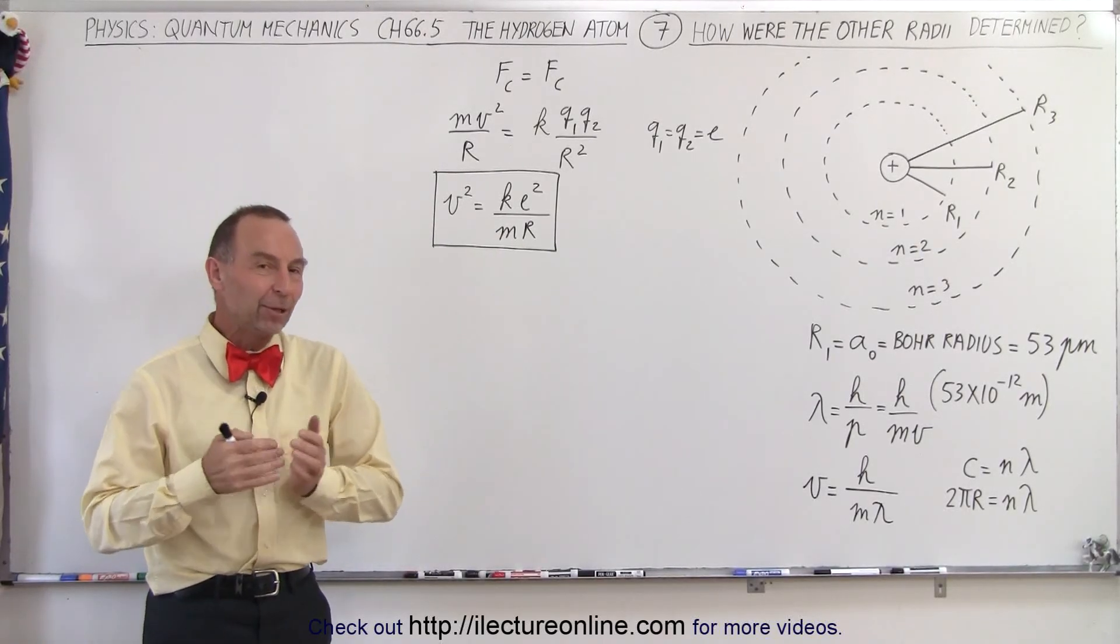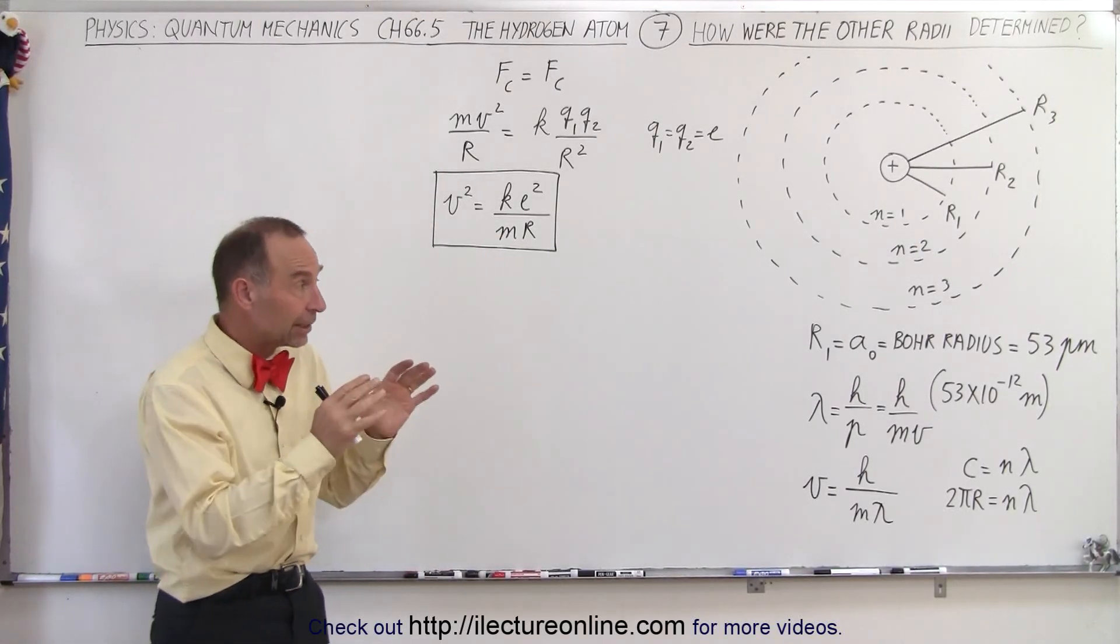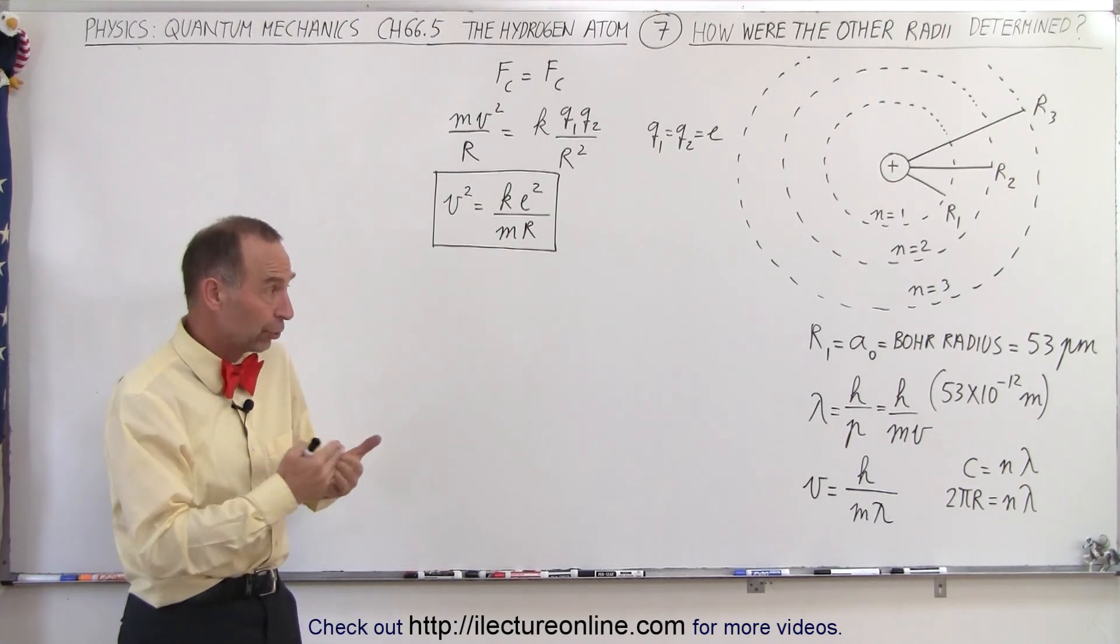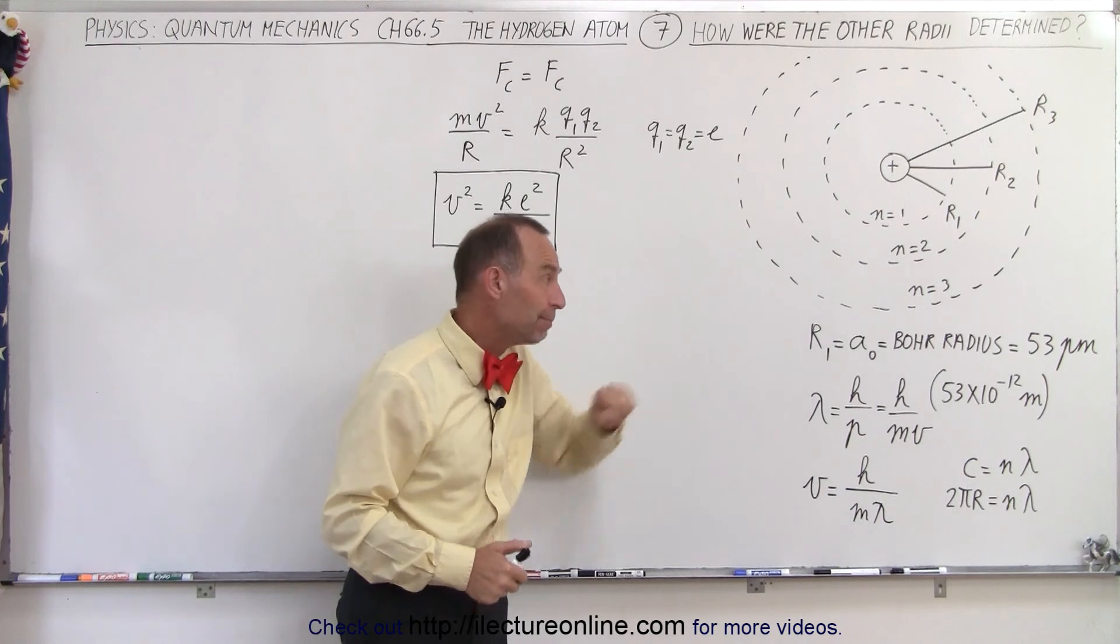Welcome to ElectronLine. In the previous video, we saw how they calculated the innermost radius of the Bohr atom, the hydrogen atom, and it turned out to be 53 picometers.